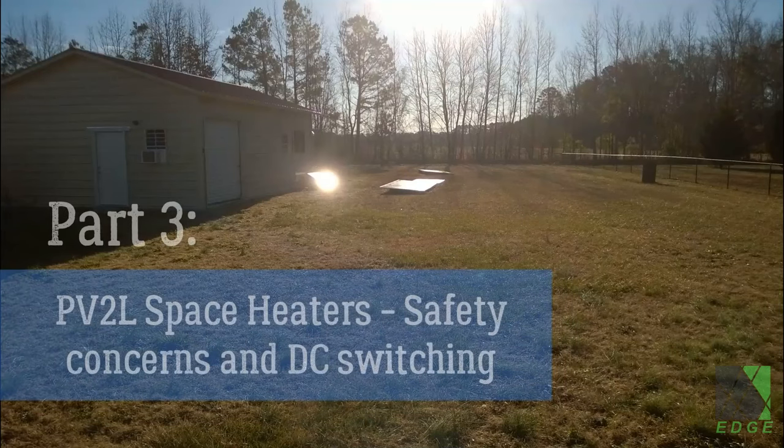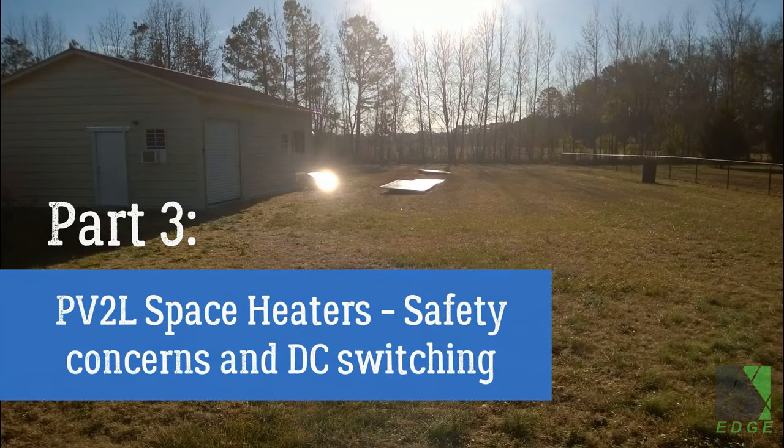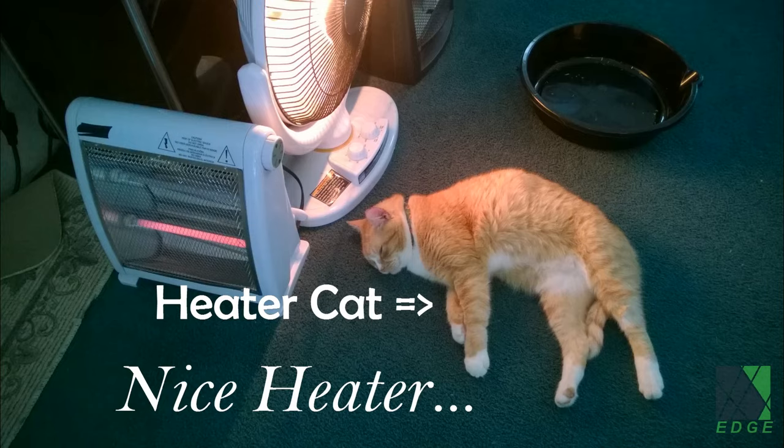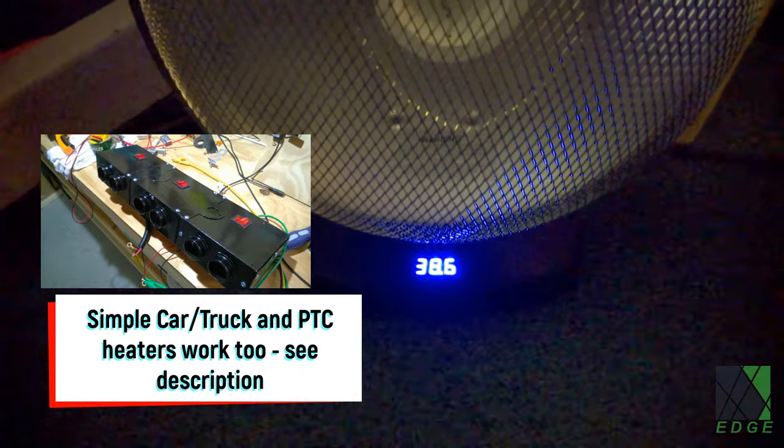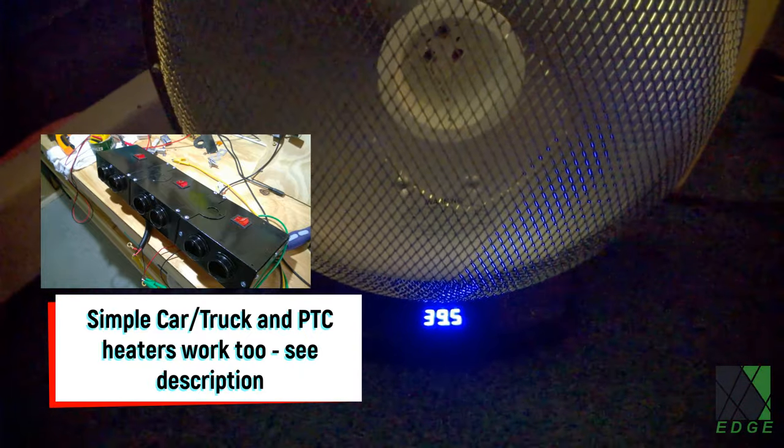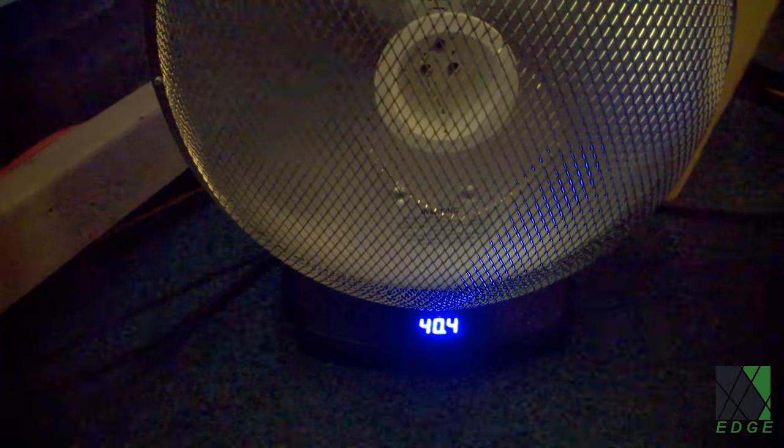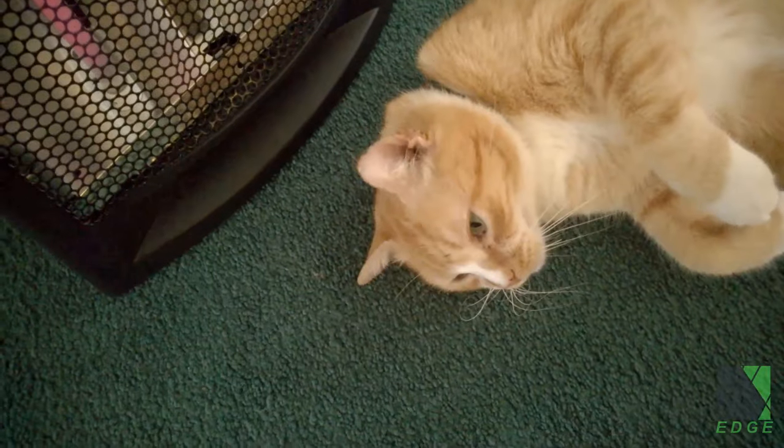Previously, I showed how I used direct PV DC solar power to run various converted DC space heaters in my home for several winter seasons now. Most recently, I standardized on modified AC space heaters converted to DC low-voltage operation, which have MC4 connectors and plug directly into the solar panel arrays. I have built over eight of them by now.